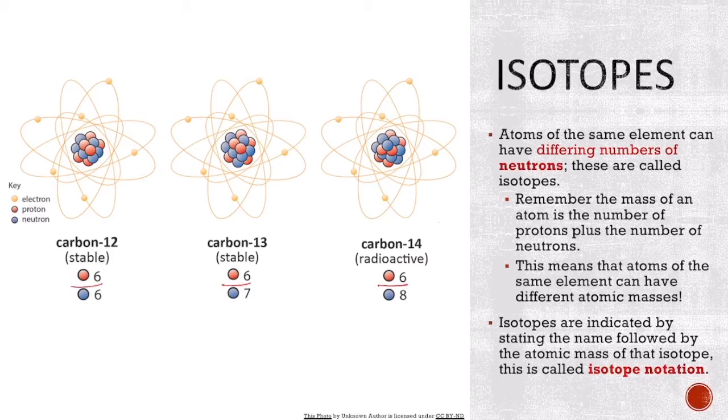If you take a look at these three examples I have over here, these are all three carbon isotopes. Carbon-12, carbon-13, and carbon-14. You notice that they all have the same number of protons, and that's what makes these carbon. They have to have six protons in order to be carbon. But they can vary in the number of neutrons that they have. Carbon-12 has six neutrons, carbon-13 has seven, and carbon-14 has eight.